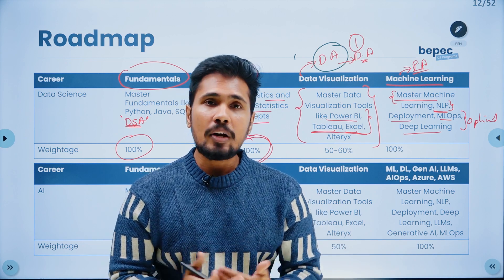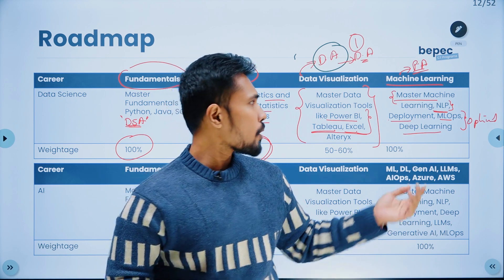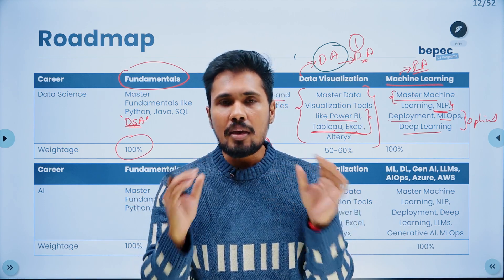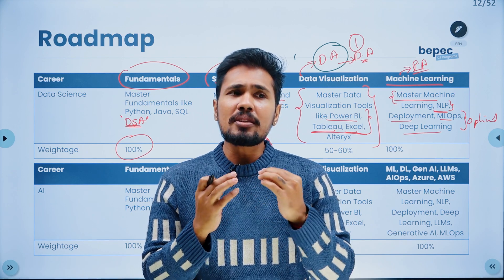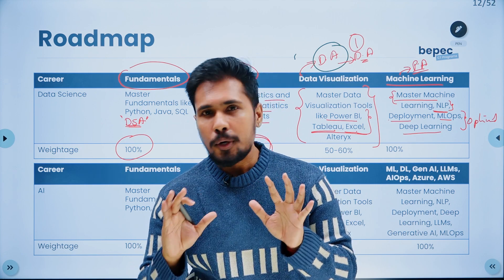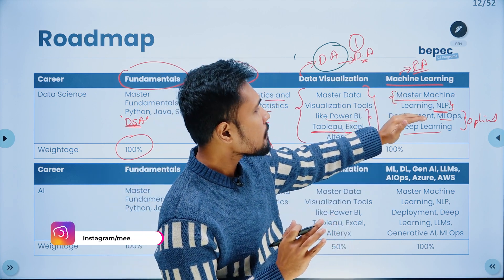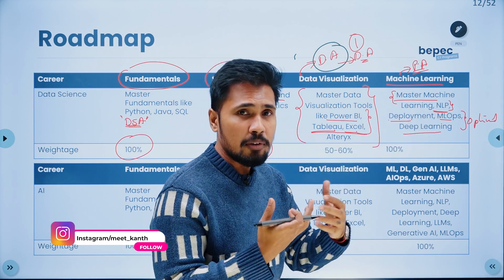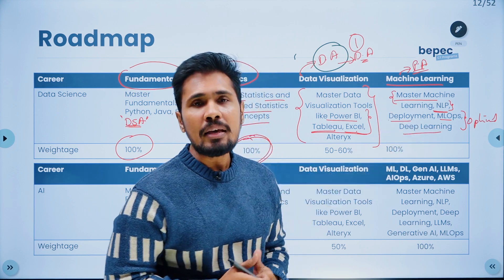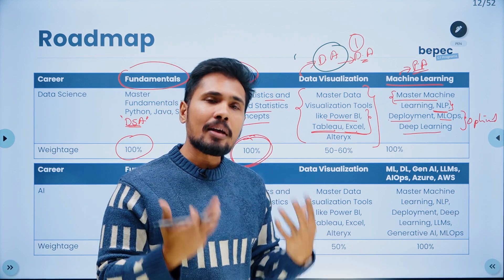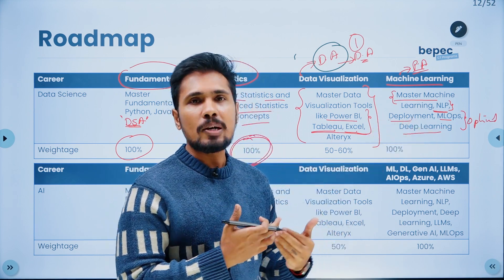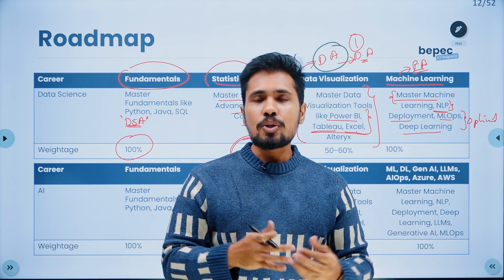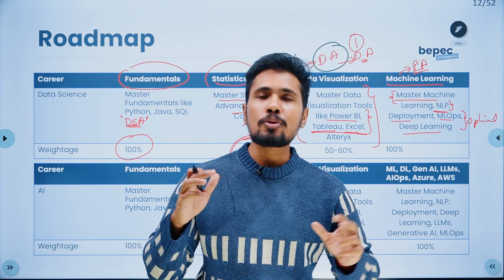If you are from a non-programming background and don't know how to deploy a model or software engineering, there are libraries like Streamlit within data science that make the work easier. If you are still unable to learn deployment, just having good real-time projects on machine learning and NLP will help you. In case you have time, learning deployment, MLOps, and deep learning would be an advantage. Personally, for my learners, I cover deployment and MLOps to help them understand the end-to-end life cycle of how things happen in reality — even if they are not implementing it, knowing the procedure helps them crack interviews.